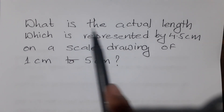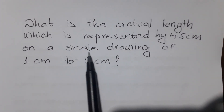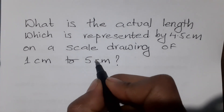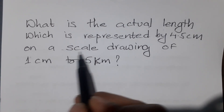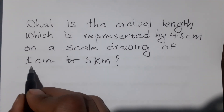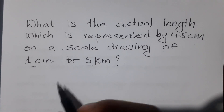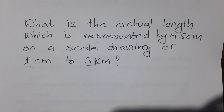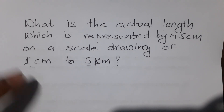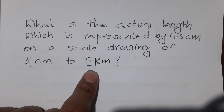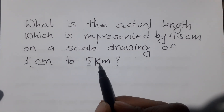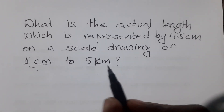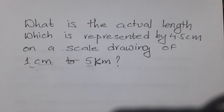This is the scale factor, which is represented by 4.5 cm on a scale drawing of 1 cm to 5 km. So what is the scale factor? The scale factor is 1 cm to 5 km. The centimeter represents a real-world kilometer. What does the map-to-world match mean? It is a map world and a real world.